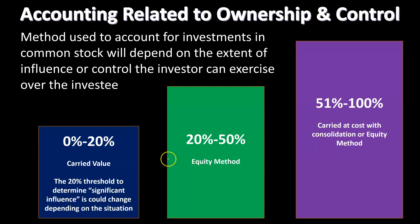If you're over that 20% line — in the 20% to 50% range — we're going to use the equity method because you have significant influence. You're over 20%, so you have influence, but you're not above 51%, so you don't have complete control. Someone else could at least tie you on the vote. But if you have 51% and you're voting on something, you win — that's a pretty hard line where we say you have control.